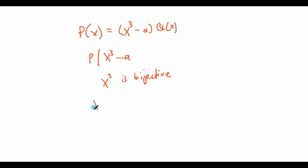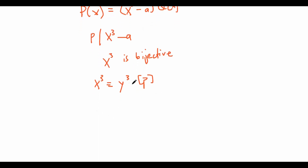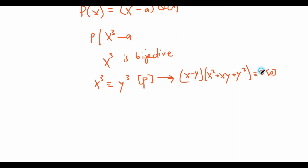The most common way to prove bijectivity is to show that if x³ ≡ y³ (mod p), then x ≡ y (mod p). We can factor this as (x − y)(x² + xy + y²) ≡ 0 (mod p). We assume for the sake of contradiction that x − y is not ≡ 0 (mod p), meaning x and y are different, and we want to arrive at a contradiction. So we are left with x² + xy + y² ≡ 0 (mod p).